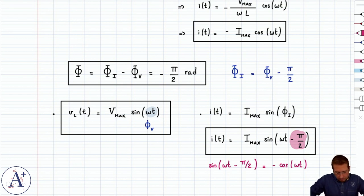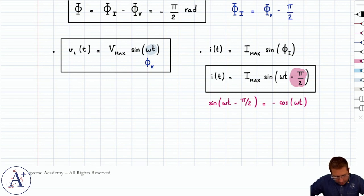And so then to wrap this up, let's introduce the inductive reactance. And let's write that Imax equals Vmax divided by ωL. And again, we're going to try to put it in a form that is equivalent to Ohm's law.